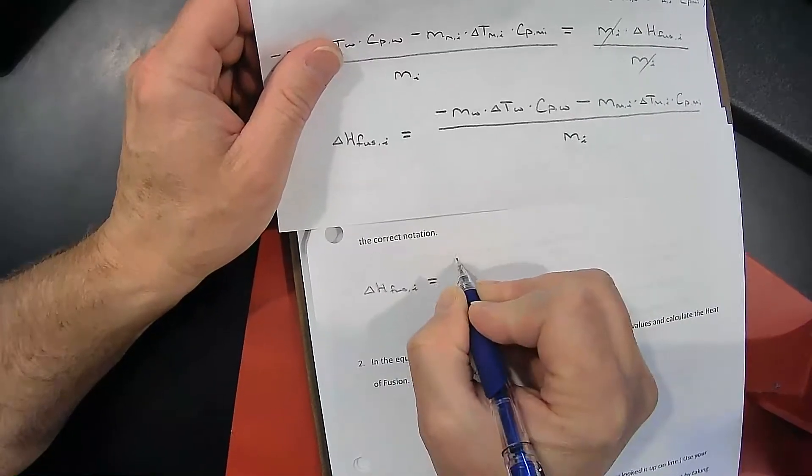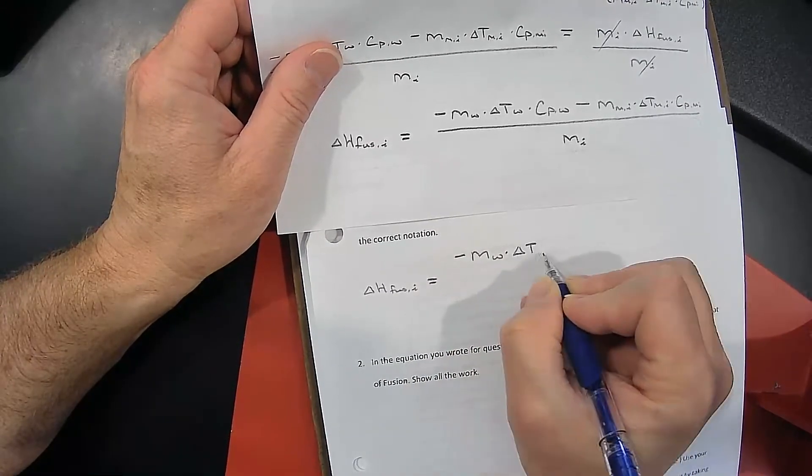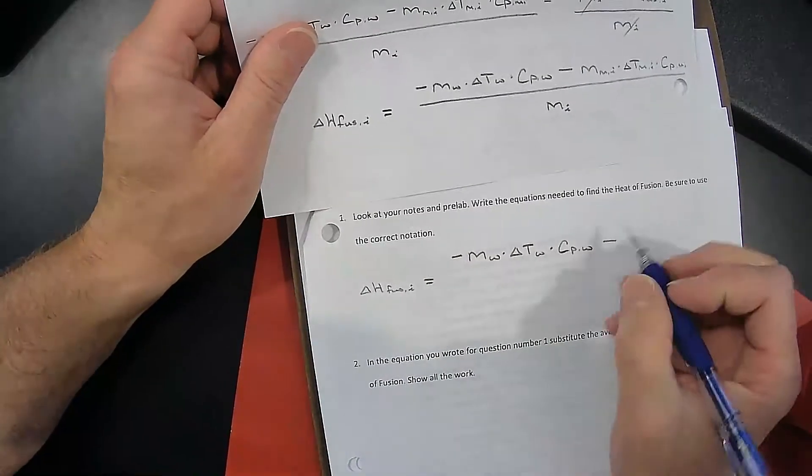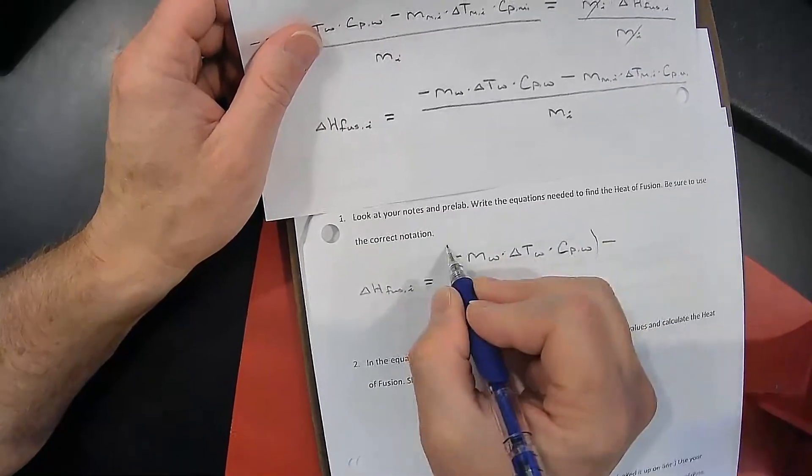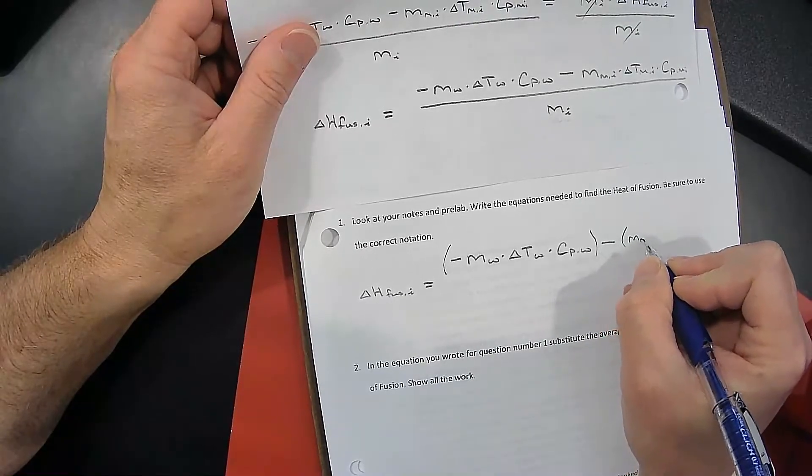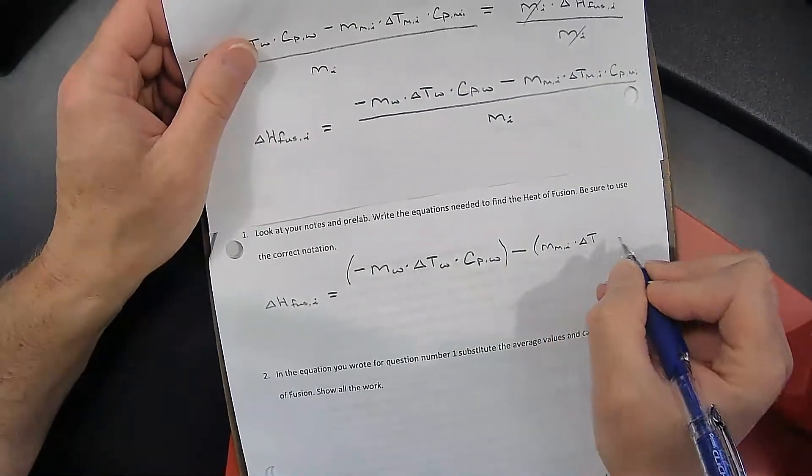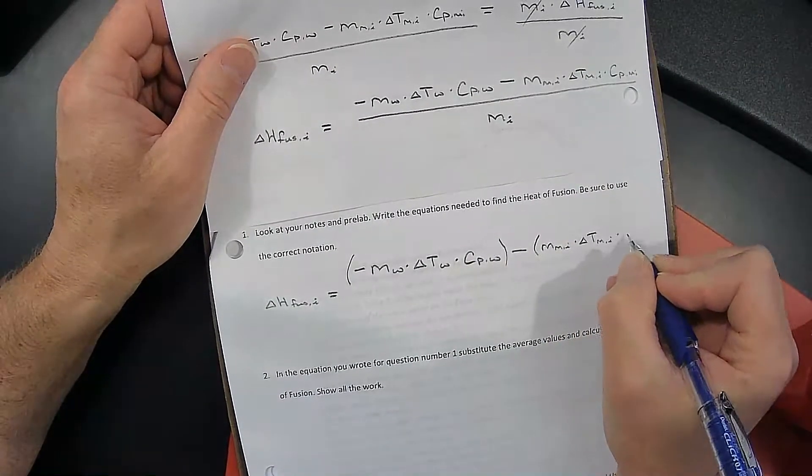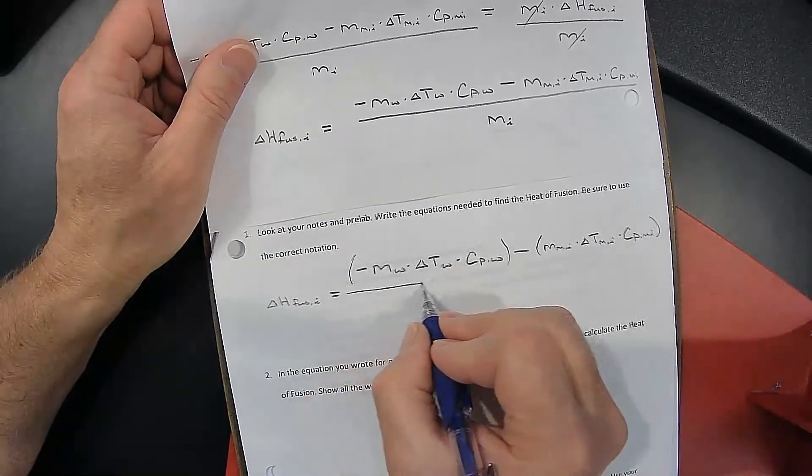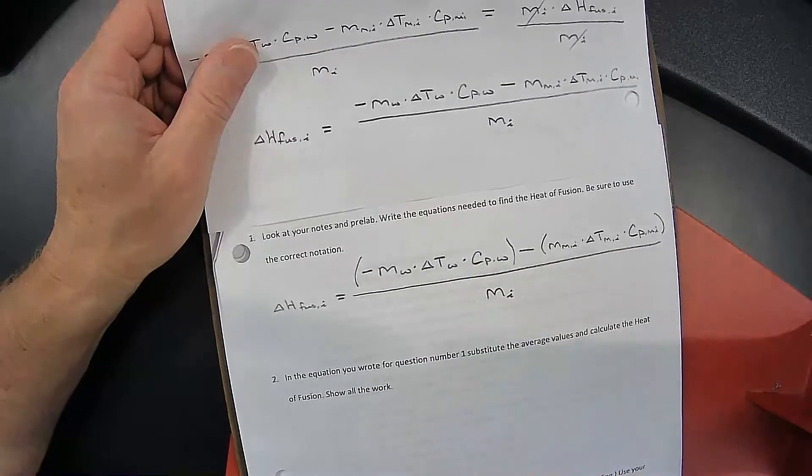of our ice was equal to the negative mass of the water times the change in temperature of the water times the specific heat capacity of water, all subtract the mass of the melted ice times the change in temperature of the melted ice times the C_p value of the melted ice, all divided by the mass of the melted ice.